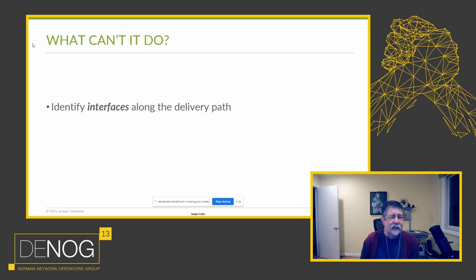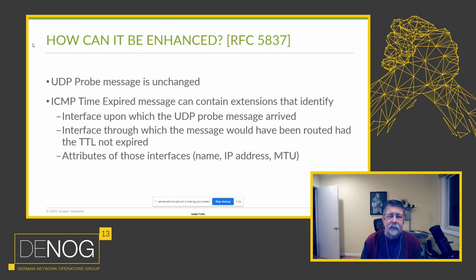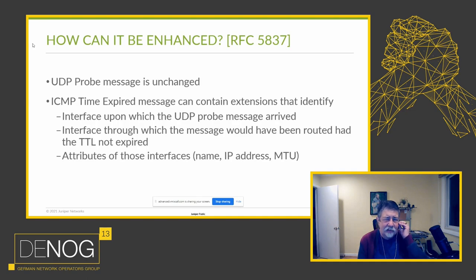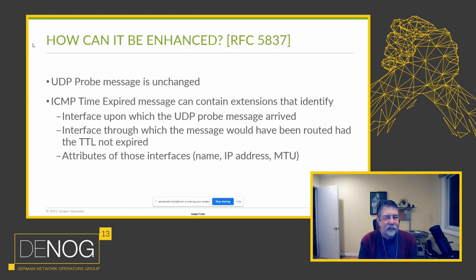What can't traceroute do? It can't identify the interfaces along the delivery path. When you do a traceroute and get responses from a bunch of addresses, that doesn't mean the packet entered the node through that address or would have left through that address — it just means that address is on the box the packet visited. So how do we enhance traceroute? This is RFC 5837. The probe message is unchanged, but the ICMP time-expired message contains extensions that can identify the interface upon which the probe arrived, the interface through which the message would have been routed had the TTL not expired, and attributes of those interfaces: their name, their IP address, their MTU.